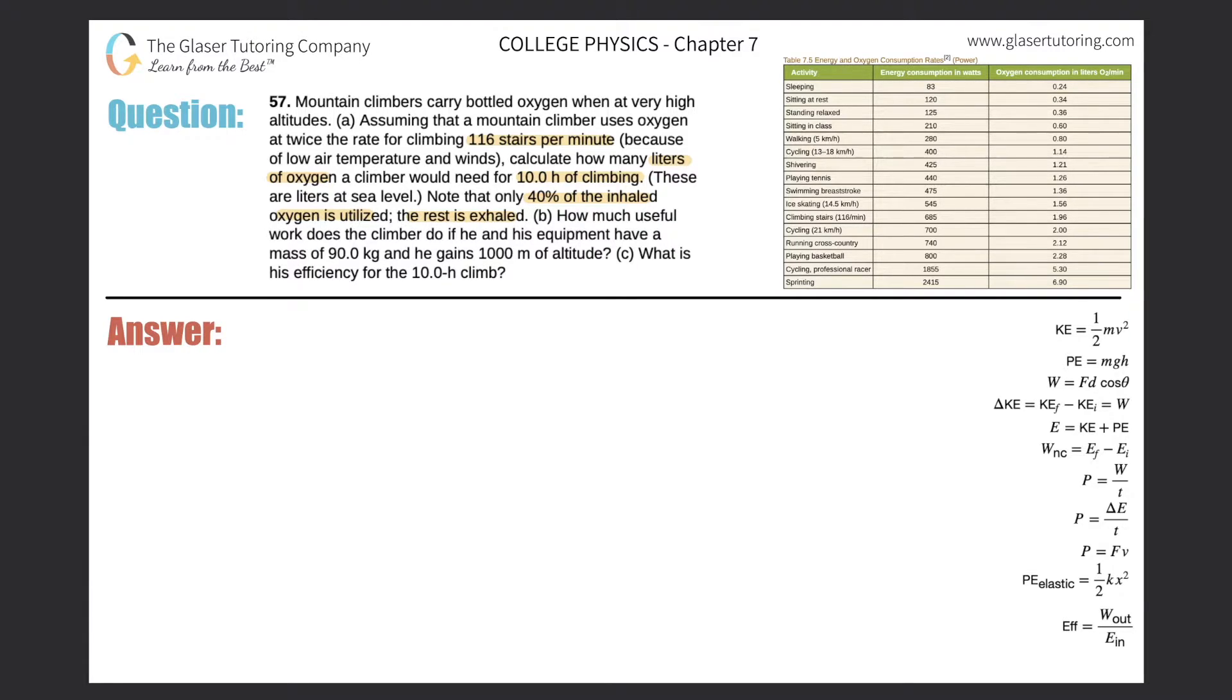These liters are at sea level. Note that only 40% of the inhaled oxygen is utilized, the rest is exhaled. So basically what we need to realize is that the values here in the table on the upper right - this says oxygen consumption in liters of O2 per minute and energy consumption in watts. For example, the cycling value of two liters per minute is the actual value of air that will go to useful work. This value correlates perfectly with 700 watts. So this is not the total air consumed, this is the volume of air used to do useful work.